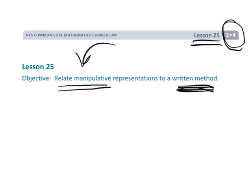So this is a transitional lesson. Some students are going to be ready to go straight to the standard algorithm. Other students are going to want to still use this a little bit like training wheels. Teachers and parents, you're going to have to use your professional judgment to know which position a particular kid is in — are they ready to move on and let go of the manipulative, or do they still need to use it as training wheels?